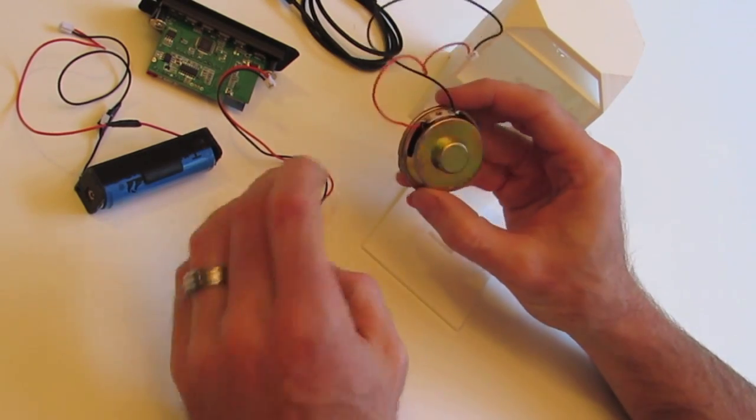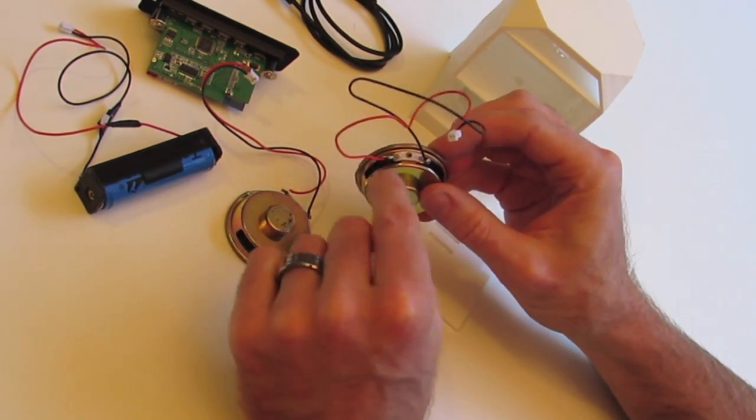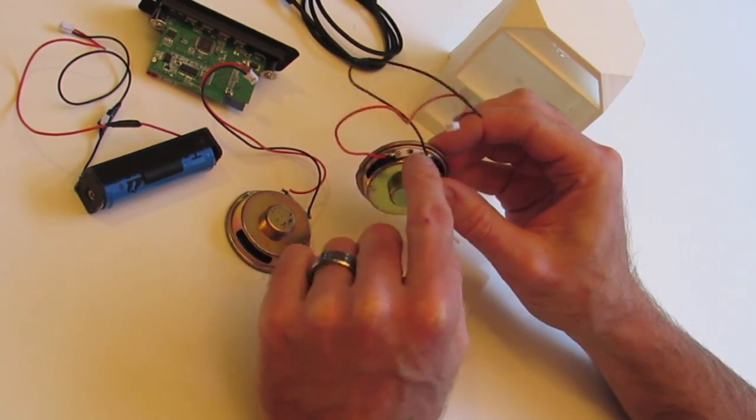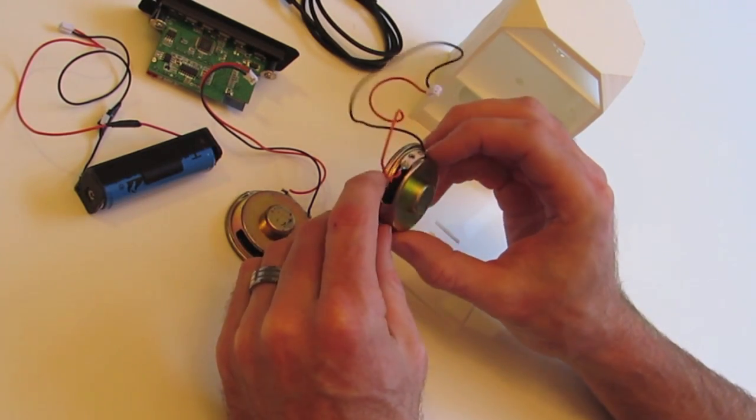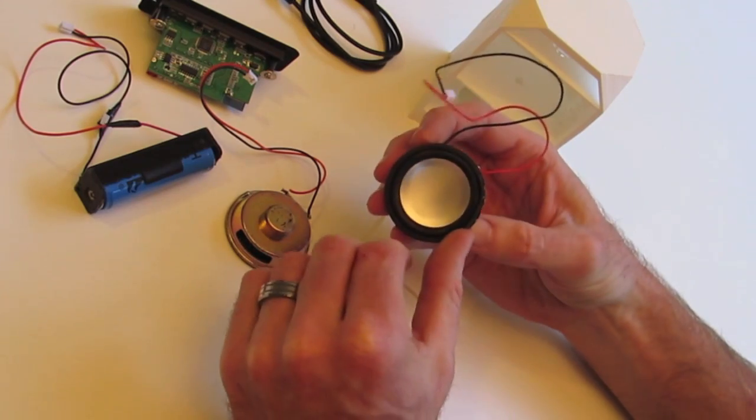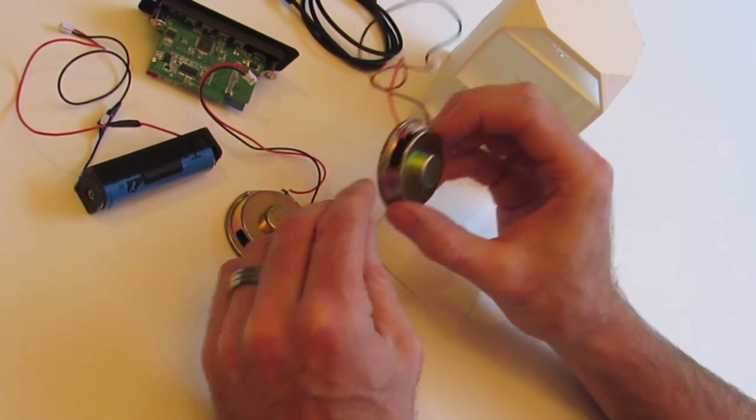If you don't have a soldering iron, or not confident to solder, you can simply just strip the wire and twist them onto the terminals. Obviously, soldering is a much more reliable means of connecting them, but you can also just twist them on.